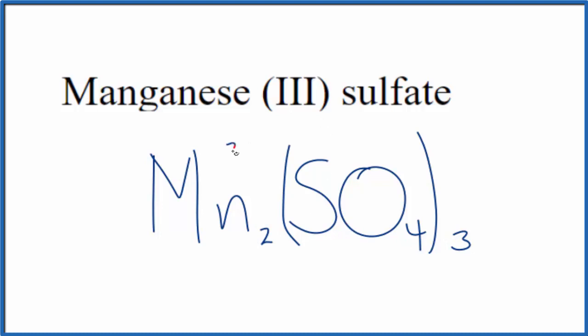Real quick, we said we had 3+ for each one of these Mn atoms here since we have the Roman numeral. And then sulfate, the whole sulfate ion's 2-. Three times 2- that's 6-. Two times 3+ is 6+. So 6+ and 6-, that adds up to 0, the net charge is 0.